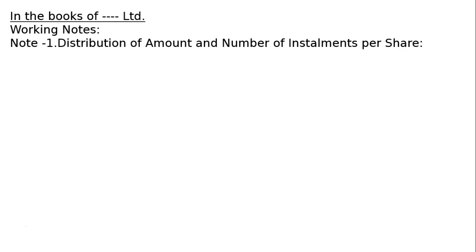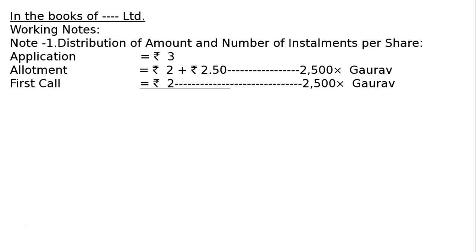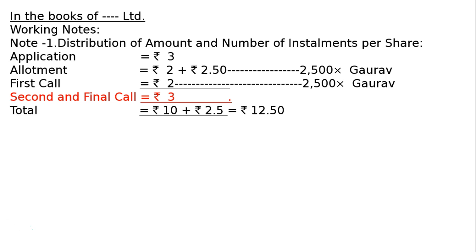Working Note 1 - Distribution of amount and number of instalments per share: Application Rs. 3, Allotment Rs. 2 plus Rs. 2.50 for Securities Premium Reserve. Gaurav failed to pay allotment money on his 2500 shares. First Call Rs. 2 — Gaurav also failed to pay the first call. Second and Final Call Rs. 3, total Rs. 10 plus Rs. 2.50 SPR = Rs. 12.50. Note: the second and final call has not yet been made.